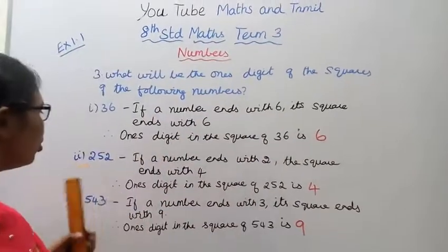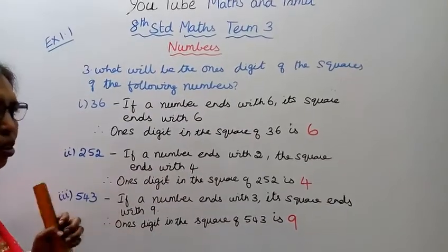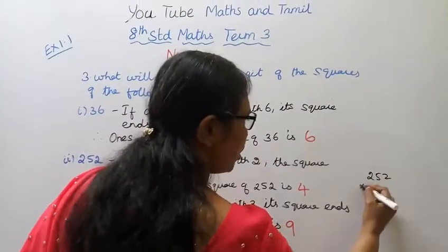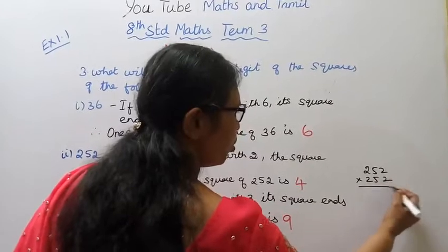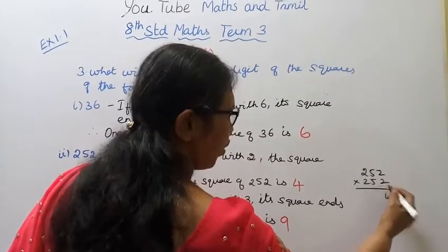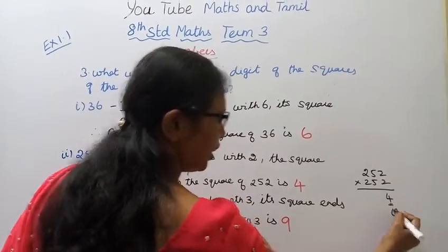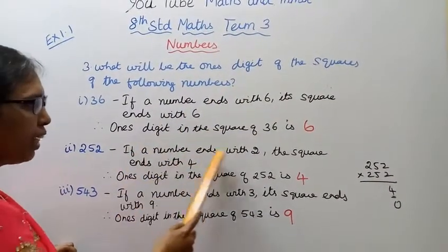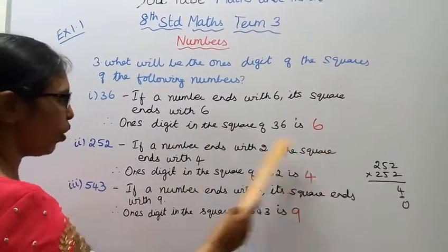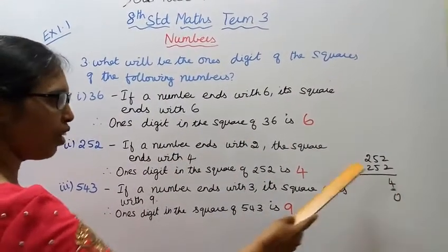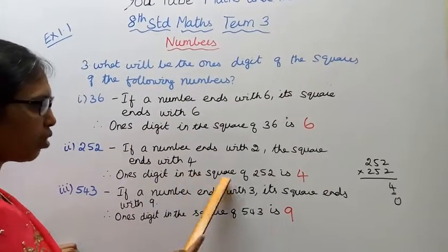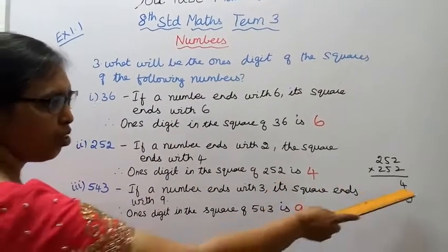For 252 - 252 into 252. Two times two equals four. This is the ones digit. If a number ends with 2, the square ends with 4. Therefore, the ones digit in the square of 252 is 4.